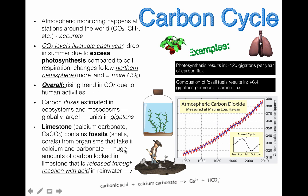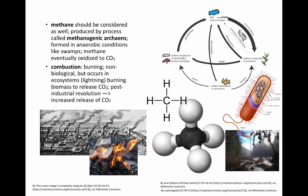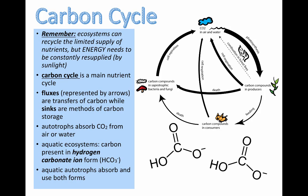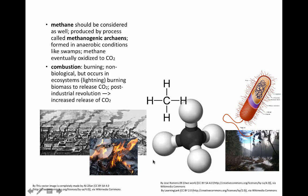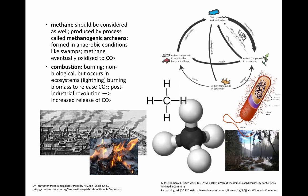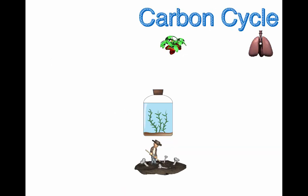Continuing our conversation about the carbon cycle and other sources of carbon — we talked about carbon in the water in the form of hydrogen carbonate ions and dissolved carbon dioxide. We also talked about methane as a source of carbon, produced by specific types of bacteria called methanogenic archaea, which produce methane because they don't have enough oxygen to break some of the carbon compounds down.